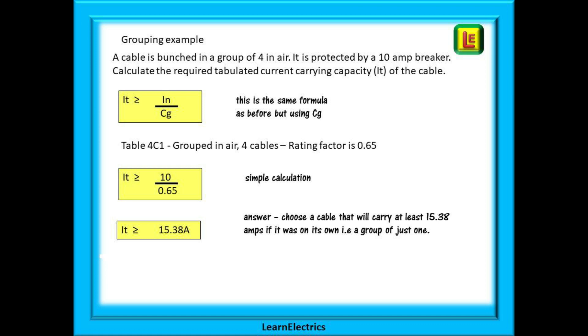A cable is bunched in a group of 4 in air. It is protected by a 10 amp breaker and you must calculate the required tabulated current carrying capacity IT of the cable. This is the same formula as before except now it is for groups of cables instead of air temperature. Pause the video and work through this example. This is an easy calculation and your answer should be 15.38 amps.